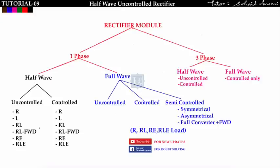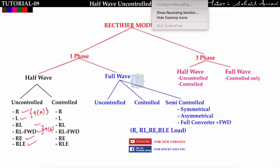That covers lecture 9b — we have covered RL load and RL with freewheeling diode and seen the advantages of inserting a freewheeling diode. In the next lecture we will cover RE type of load and RLE type of load in the single phase half wave uncontrolled rectifier. If you understood the concept, please like this video. For doubt solving you can join our Facebook group.